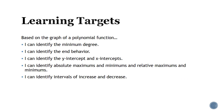The learning targets for this lesson are that you can identify the minimum degree using the graph of a polynomial function, identify the end behavior, identify the y-intercept and the x-intercepts, identify absolute maximums and minimums and relative maximums and minimums, and that you can identify intervals of increase and decrease. All of these come from looking at a graph of a polynomial function.